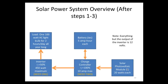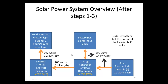Let's review what we've done so far. We found that we need one inverter and two charge controllers. Going to the load is 100 watts when it's on, and the energy needed is 0.2 kilowatt hours per day. When the light bulb is on, the inverter is drawing 200 watts from the charge controller, and the energy coming from the charge controller is 0.4 kilowatt hours per day — which we need to supply either from the battery or from the solar module.